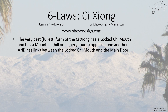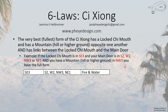The fullest form of the Qihong has a locked Chi mouth and a mountain opposite one another, plus a link between the locked Chi mouth and the main door of the building. That gives you as much energy as you can possibly get from the Six Laws. For example, if you had a locked Chi mouth in Southeast 3, your main door in one of the corresponding sectors from the tables, and a mountain — including a hill or higher ground — in Northwest 3, you have the fullest form.